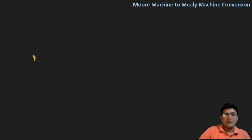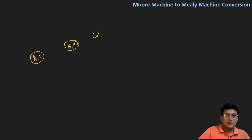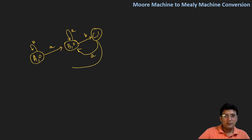Let's say I have state A on which zero is associated, and state B where zero is associated. We also have state C where one is associated. On B, I remain at state B itself; on A, I move to A; on A, I remain; on B, I move to A; I again move here; and on B, I move to state A zero. So this is the Moore machine which has already been defined.